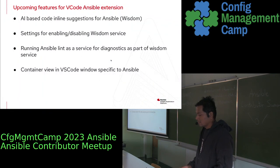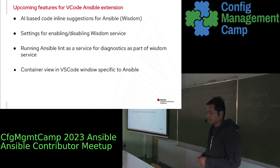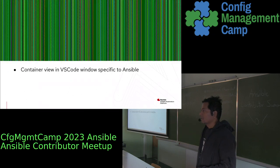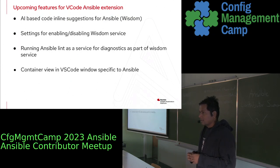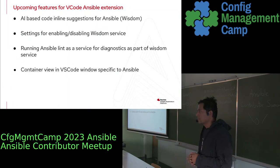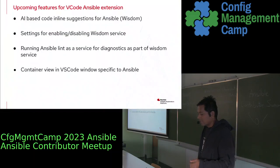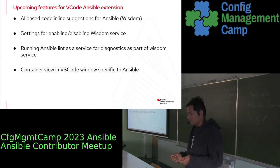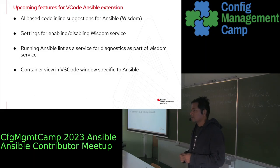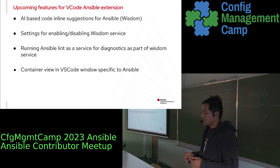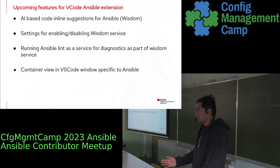In the next couple of months, some new features we'll be adding to the extension include AI-based inline suggestions for Ansible — that is the Wisdom project that Walter talked about earlier. Then settings to enable and disable the Wisdom service. Within the Wisdom service, we will be adding capabilities to run Ansible Lint as a service and other tools to provide diagnostic information. All those knobs will be provided under the Wisdom service. To use the Wisdom service, users will have to authenticate themselves. For that, we'll be adding a new container view within VS Code for Ansible with a login page. These features will be coming around the March timeframe.